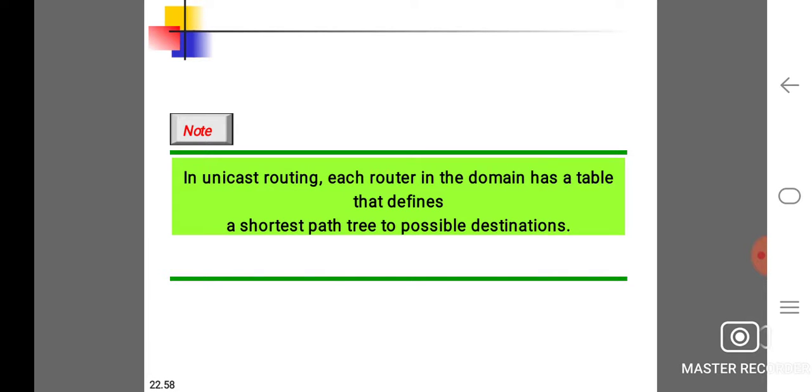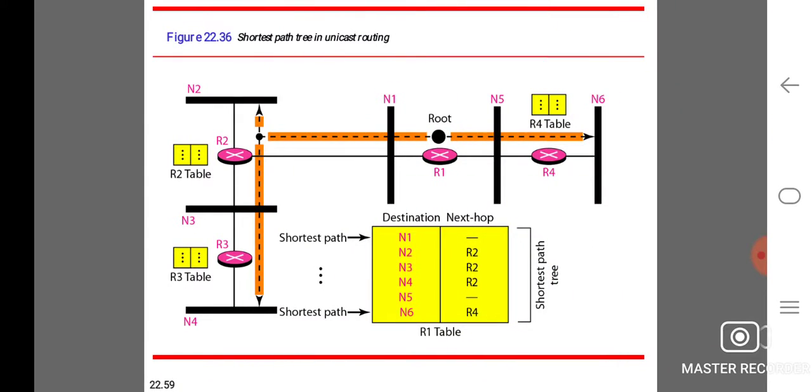In multicast routing, each router in the domain has a table that defines the shortest path tree to possible destinations. Shortest path tree in unicast routing.